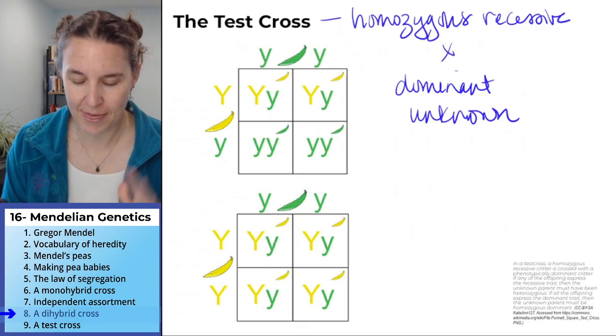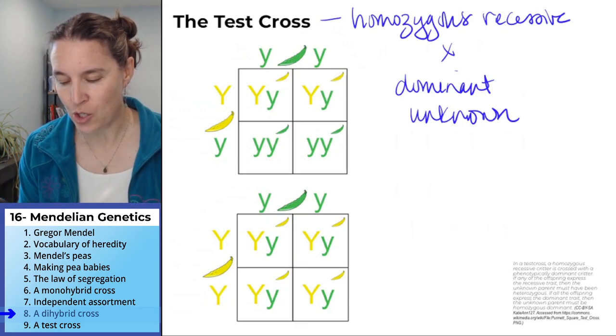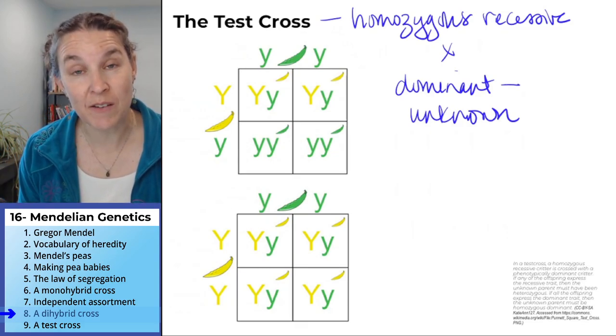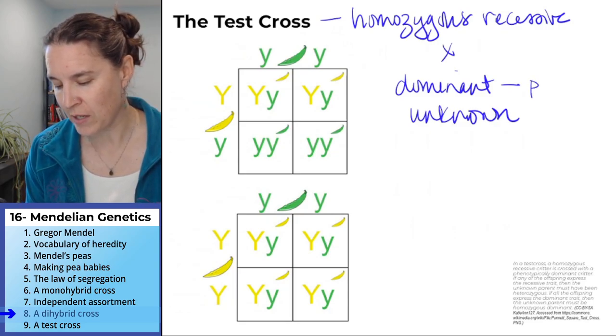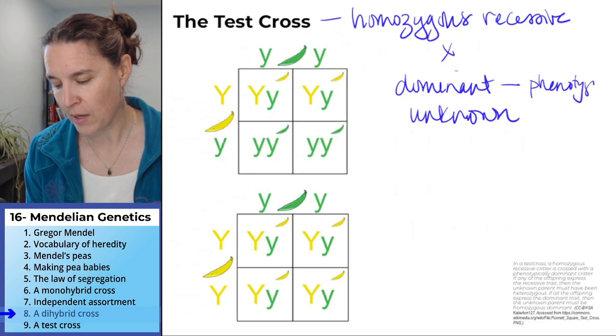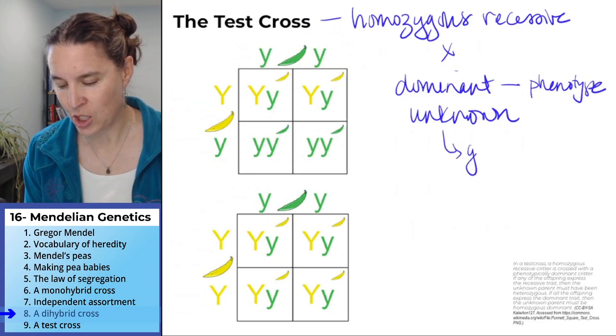A dominant unknown just means that they're expressing the dominant phenotype, but you don't know the genotype. So the dominant phenotype is expressed, but the genotype is unknown.